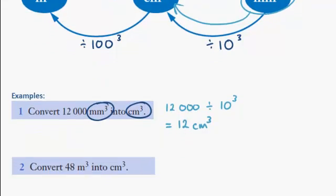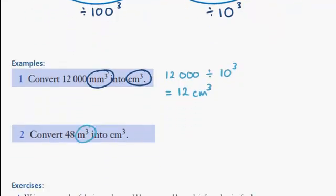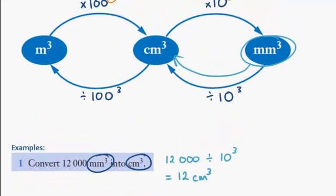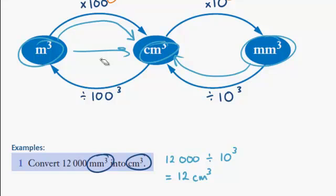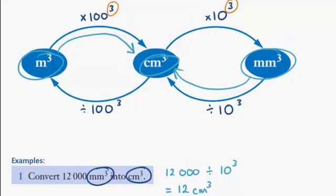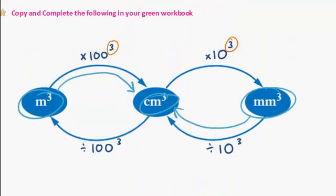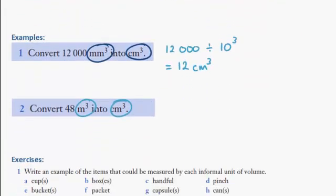Second example. Meters cubed to centimeters cubed. Let's have a look at that one. Meters cubed to centimeters cubed. So which arrow am I following? I'm following the top arrow. So that top arrow tells me to times by 100 cubed. So I started with 48. I'm going to times by 100 cubed.